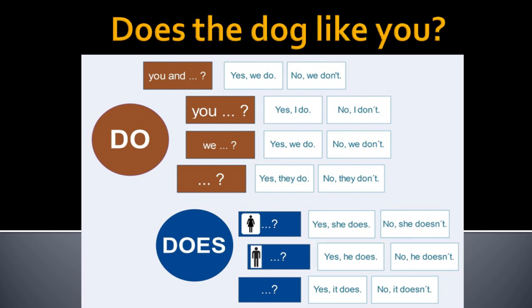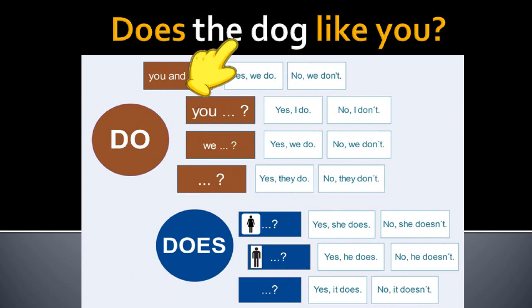One more question. Does the dog like you? Look at the first word. Is it do or does? It is does. So it is the blue circle. Now look what is after does. The dog. Is the dog a woman? No. Is the dog a man? No.